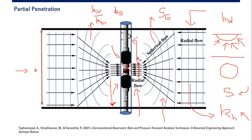If you test your wellbore long enough — flow or shut in long enough — you may also detect your boundary, whether it's a fault, pinch-out, or other permeability barrier. You can estimate the distance from your wellbore to that boundary if the pressure transient propagation reaches that point. That's all for this video. I hope you enjoy it and find it useful. Thank you so much for watching, and see you again in the next pressure transient analysis video.